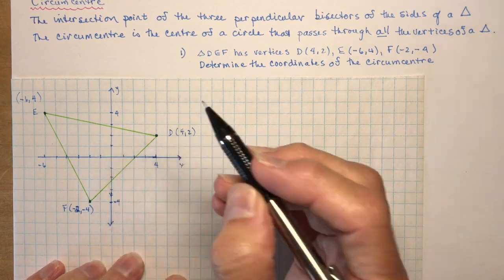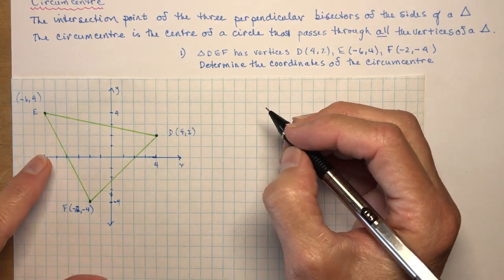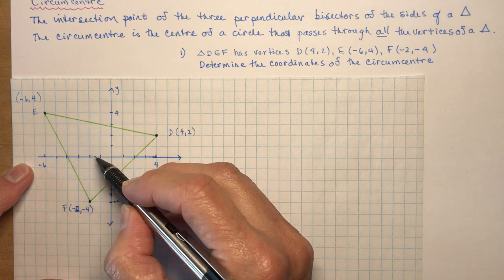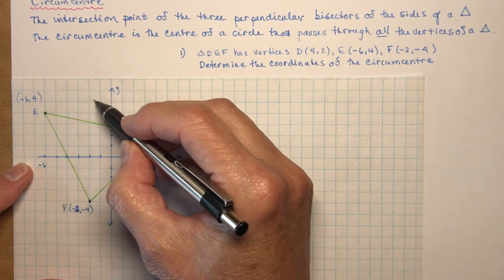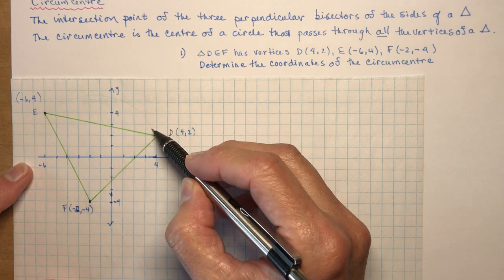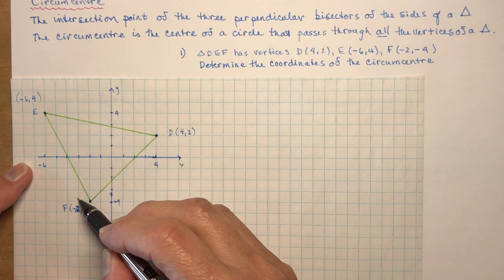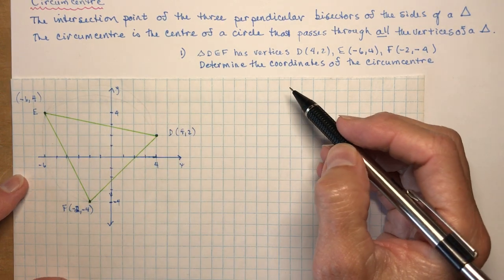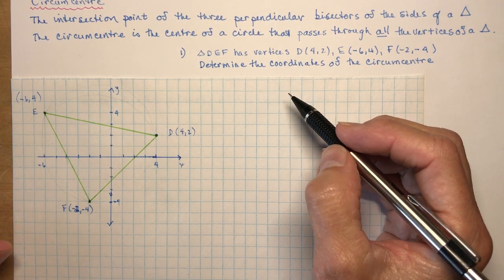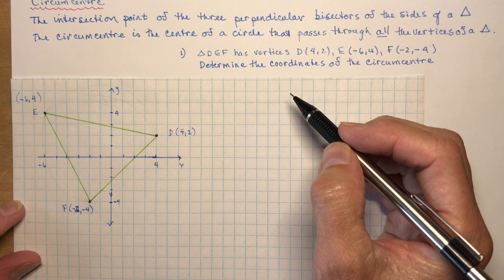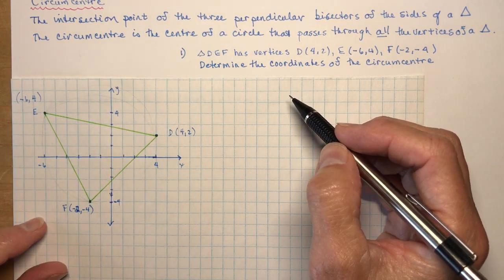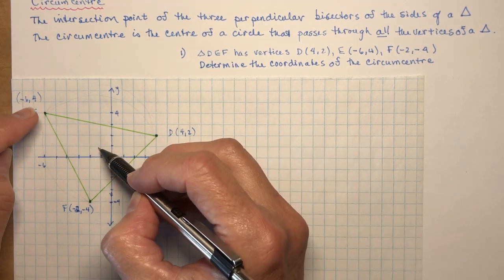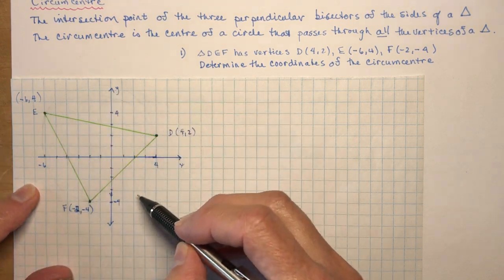I'm going to do this in pencil because you really should be using a pencil for your math. I have these three vertices and I'm trying to find the circumcenter — the very center of a circle that passes through all three points. If you have a compass when you've found the circumcenter, you can measure the distance to one vertex and draw a nice circle around it.